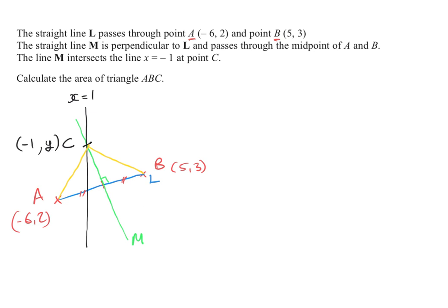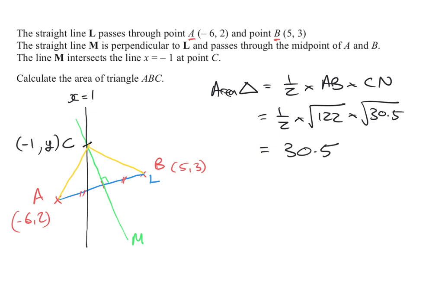Finally, we get to the point where we can calculate the area of our triangle. So the area of the triangle is equal to half multiplied by the length of the base, which was AB. So half of AB multiplied by the height, which we said was CN. So that's 0.5 multiplied by AB was the root of 122. CN was the root of 30.5. And when you put that into a calculator, you get the answer of 30.5. There are no units there because we didn't use any measurements at all. So you could write square units or you could just leave it as 30.5.